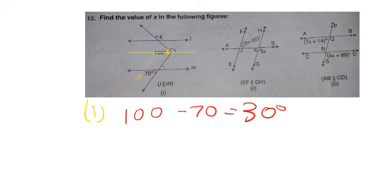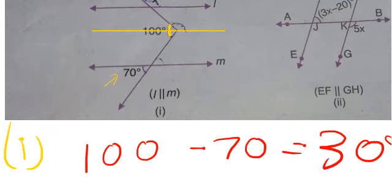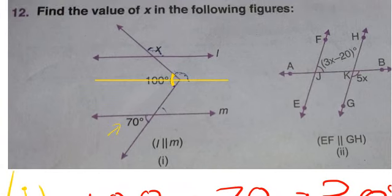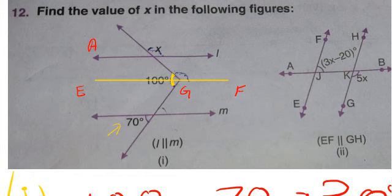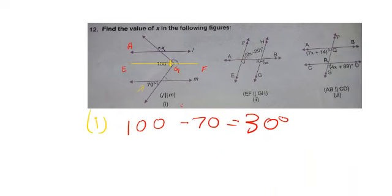I will name the points here. Let's call them A, E, F, and G. So angle G refers to this upper part, and angle G equals 30 degrees.